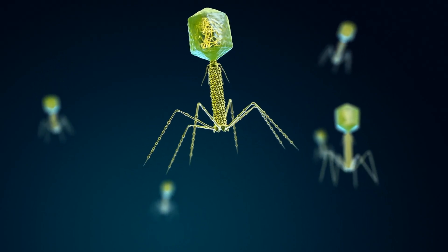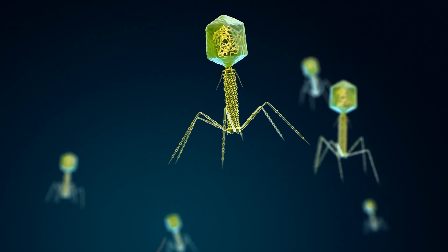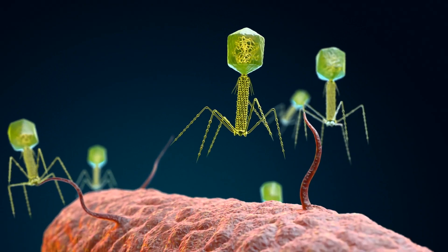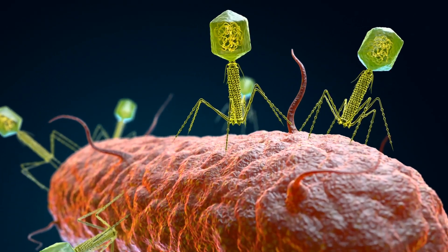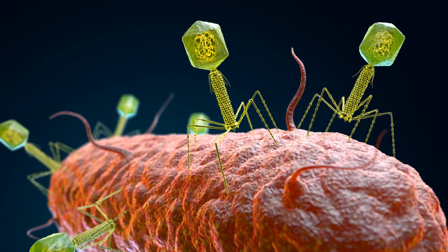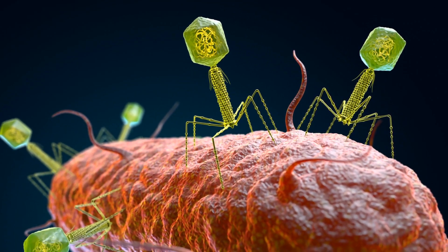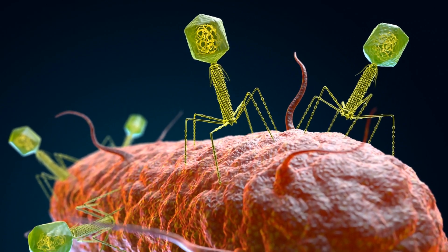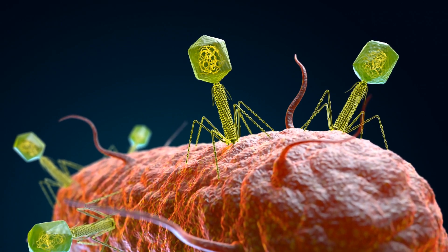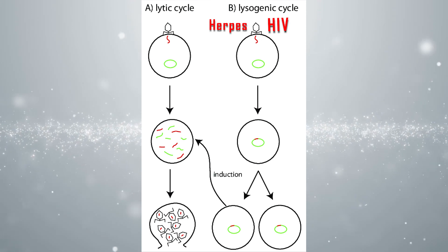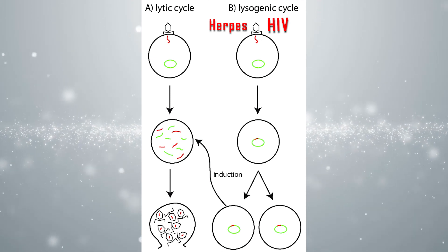They achieve this by tricking the host cell into believing that the virus's genetic material is its own, and then inject their genetic material inside the cell. In some cases, the virus immediately hijacks the cell's materials — this is what happens during a lytic cycle infection like the common cold. But other viruses, like lysogenic cycle infections, have a more insidious approach. Herpes and HIV are types of lysogenic cycle infections.